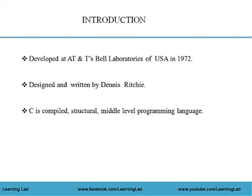All of you are aware of the fact that our computers can only execute code in binary format, which is the combination of zeros and ones. To convert our code from source code to binary format, we need a software called a compiler. The process of converting source code to binary format is called compilation. Since we use this compilation process to execute our source code, C is also called a compiled language.